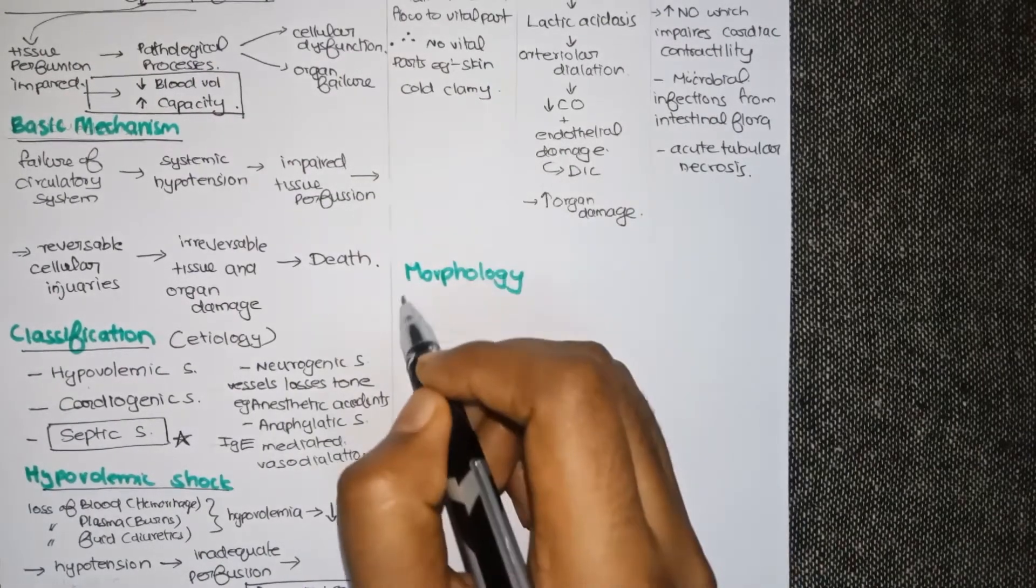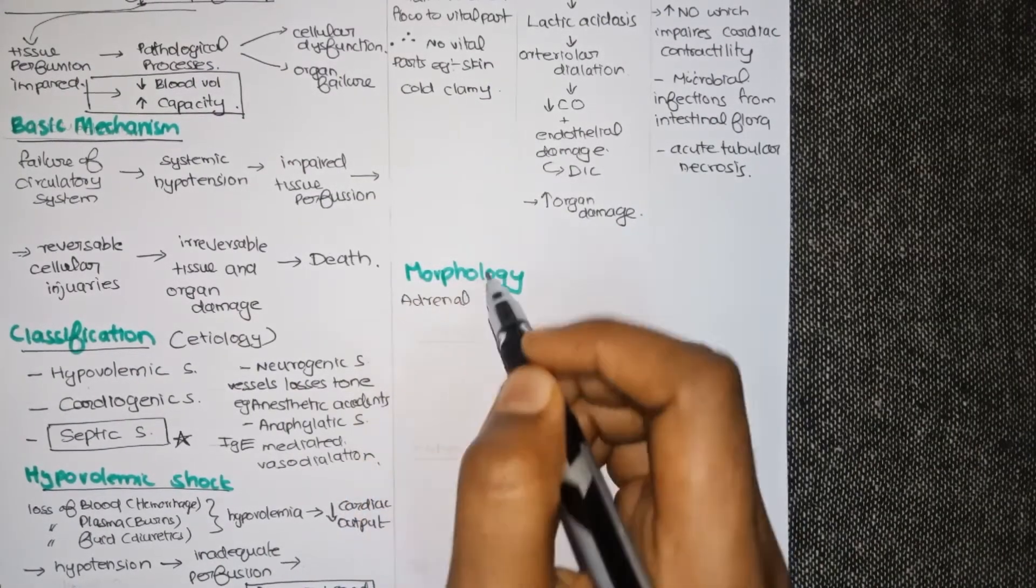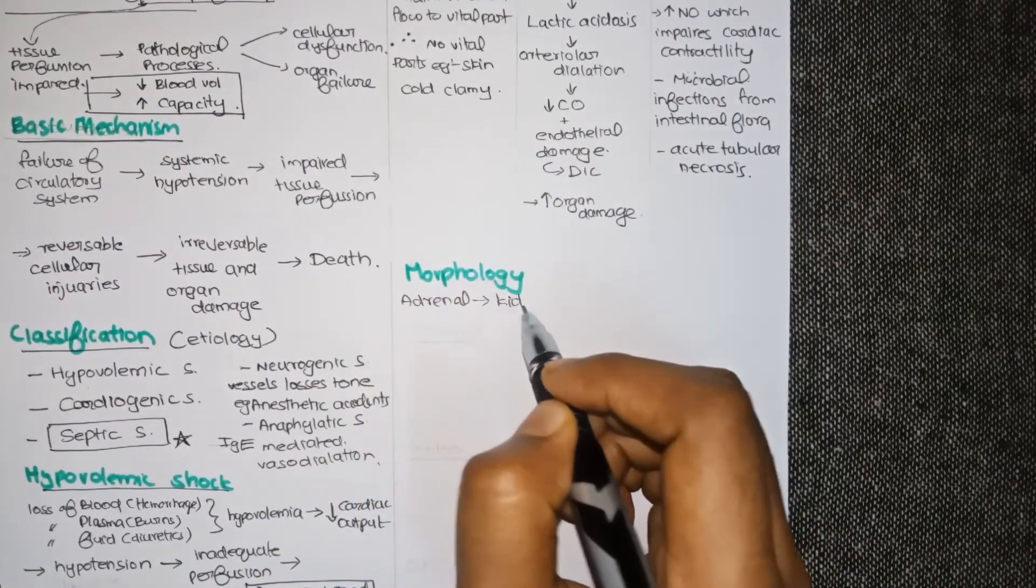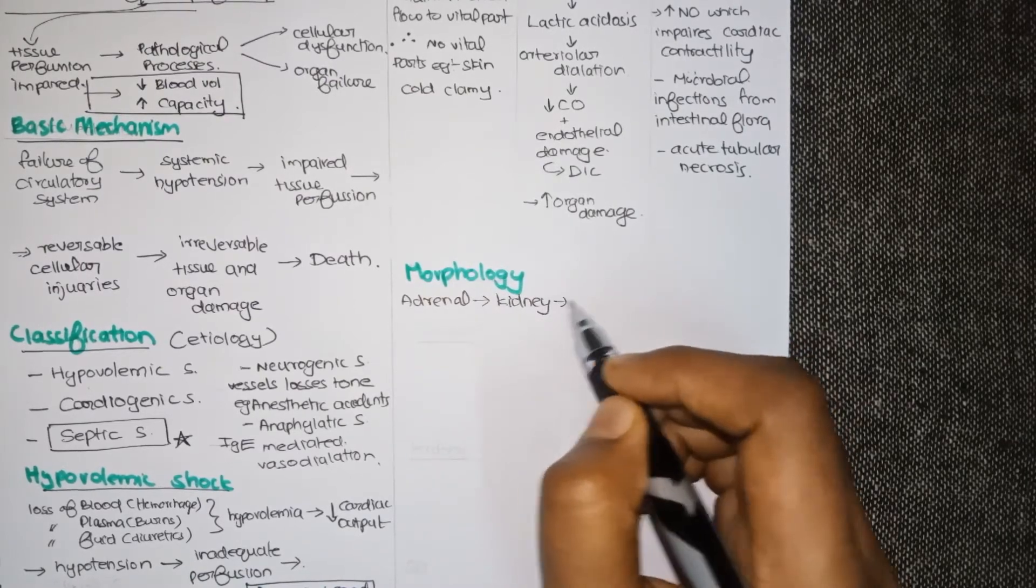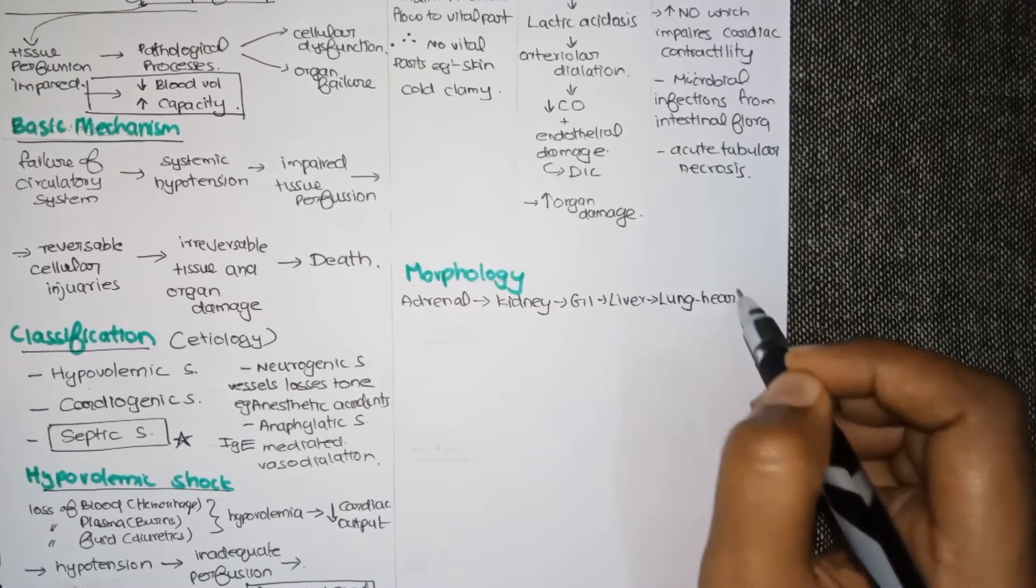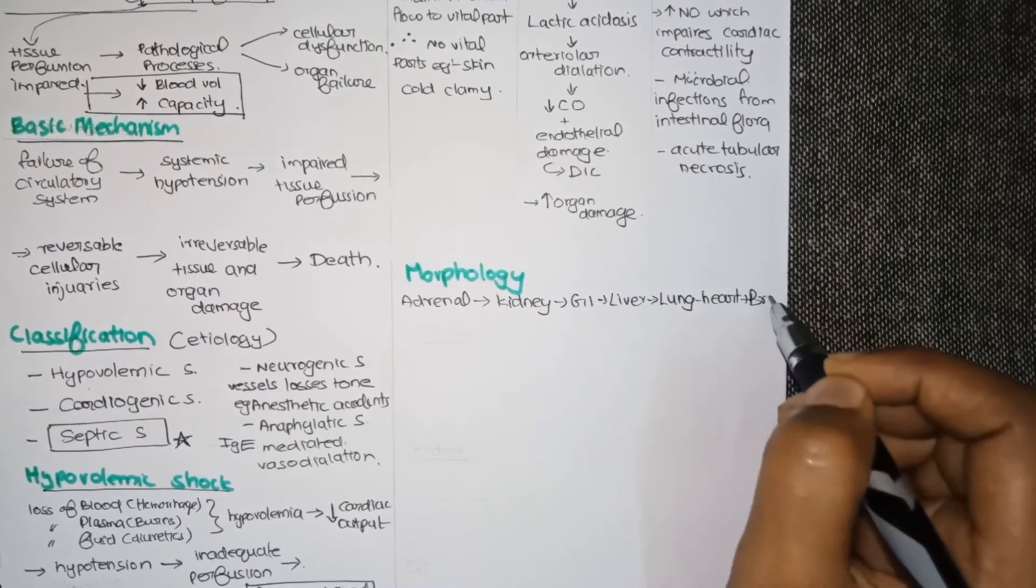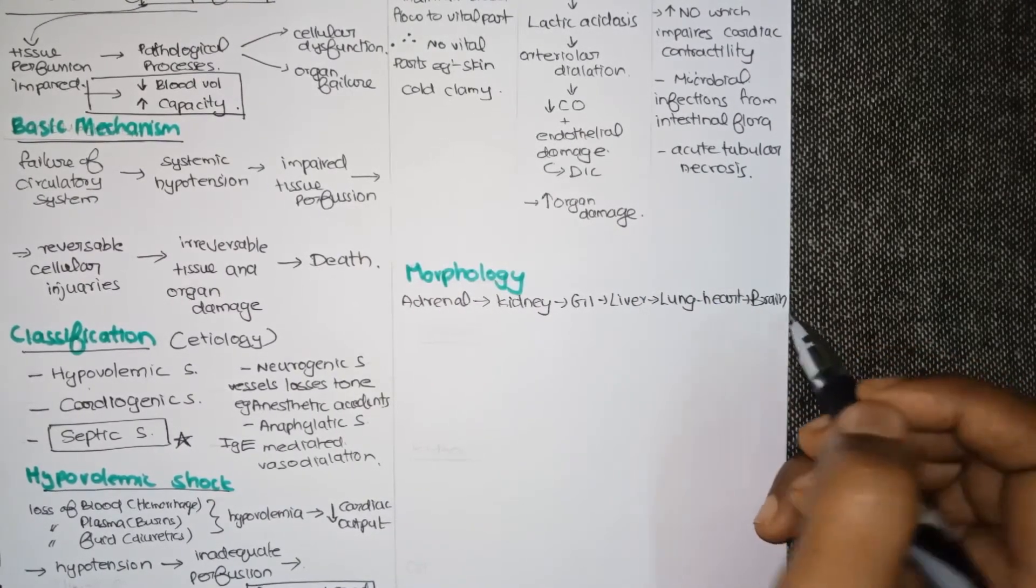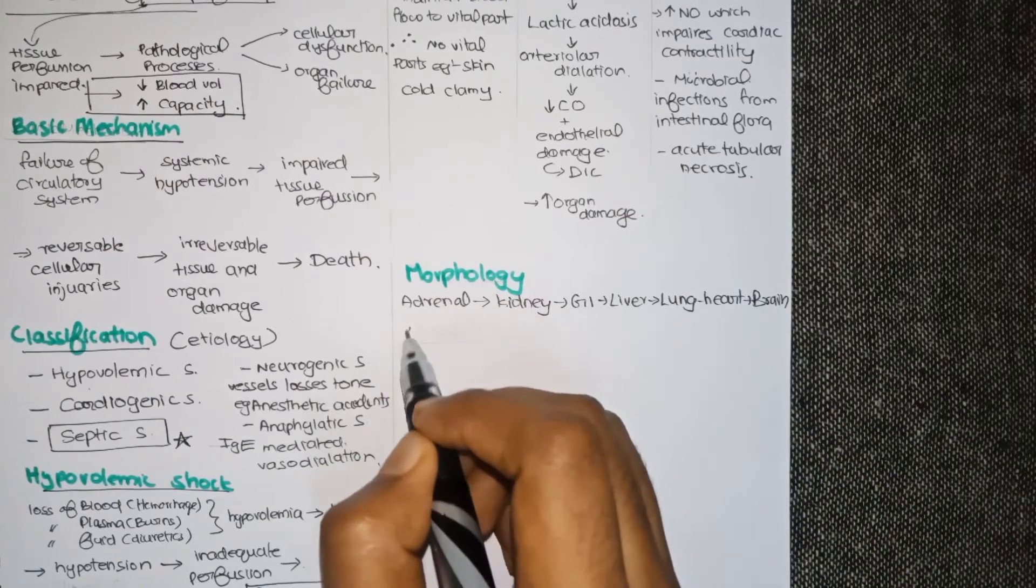In morphology the organs that are affected from the bottom to the top are adrenals, kidneys, gastrointestinal system, liver, lung, heart and brain. I will be discussing only the key features of these organs.